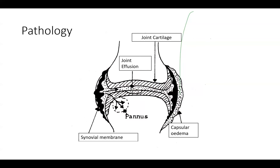This is a picture of the joint effusion pathology. Here is one bone, the other bone, and the cartilage. Here you have the effusion in the joint. This is the synovial membrane, which is inflamed and produces a lot of fluid, leading to distension of the joint capsule and capsular edema. The inflammatory tissue is undermining the joint here, which is called pannus, and that leads to little holes and destruction of the bone.